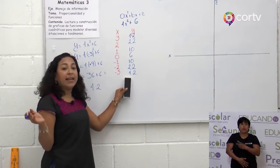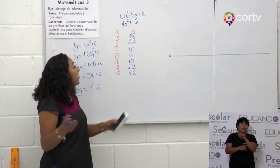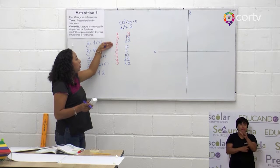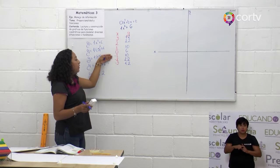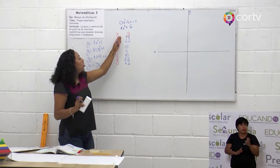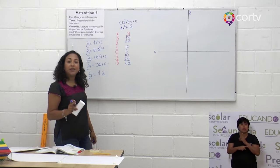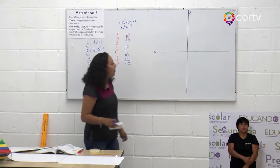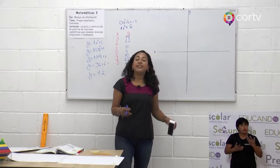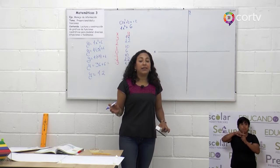Estas son mis operaciones y este es mi procedimiento. Esta es mi tabla de frecuencia. Si te das cuenta, los valores de x son positivos y después del 0 son negativos. Y todos los valores de la y están en positivo. Ahora vamos a darle valores a mi plano cartesiano.